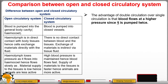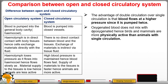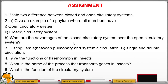The advantage of double circulation over single circulation is that blood flows at higher pressure because it is pumped twice. Also, oxygenated blood does not mix with deoxygenated blood. Therefore, birds and mammals are more physically active compared to animals with single circulation. That marks the end of the lesson — be a smart student, find the answers to these questions from the notes, and always strive to achieve the best you can.